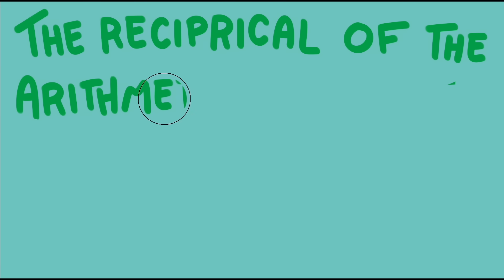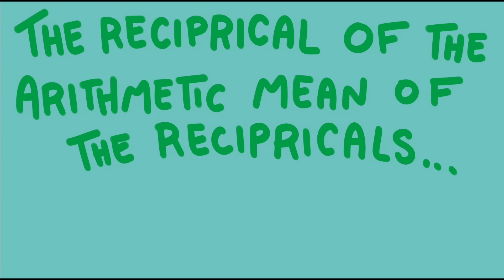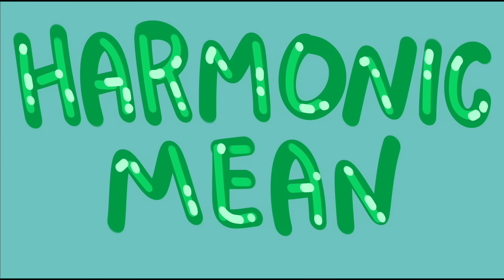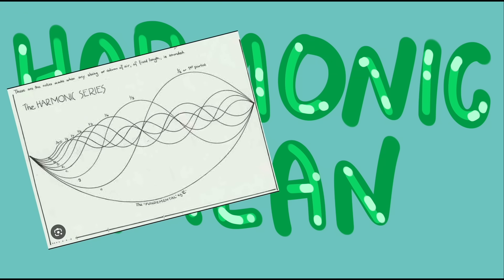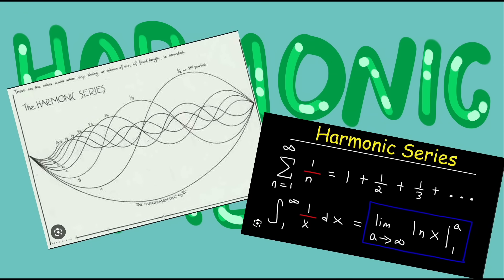So we could call this operation the reciprocal of the arithmetic mean of the reciprocals. But this operation comes up enough that mathematicians give it another name, the harmonic mean. It is called the harmonic mean because of the connection to the harmonic series in mathematics which deals with the reciprocal of the counting numbers.